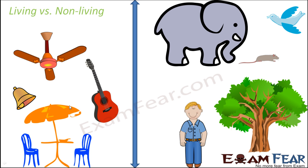Therefore it is not only one characteristic based on which we can decide whether an organism is living or non-living. There are a set of characteristics present in living organisms. A non-living organism might fulfill one or two of those characteristics, but not all. For example, a bus or a car moves but is non-living. And a tree doesn't move from one place to another, but is still living. So we cannot decide just based on one or two characteristics.